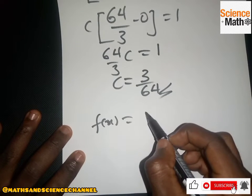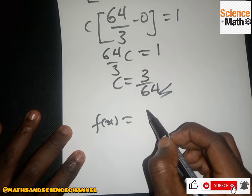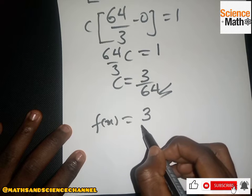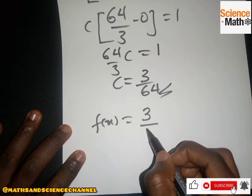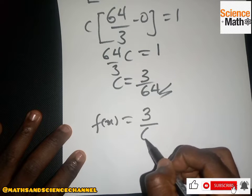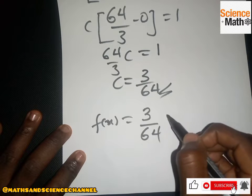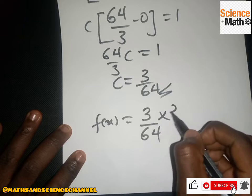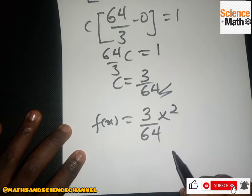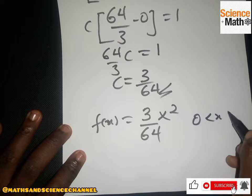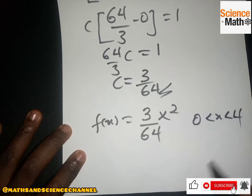So with c = 3/64, our updated piecewise PDF function f(s) is now 3/64 times s², for 0 < s < 4, and 0 otherwise.